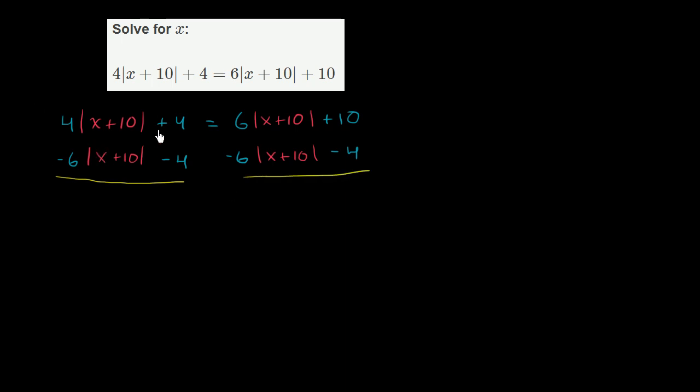On the left-hand side, the 4 minus 4, that's 0. You have 4 of something minus 6 of something. That means you're going to end up with negative 2 of that something. Negative 2 of the absolute value of x plus 10. Remember, this might seem a little confusing, but if you had 4 apples and you subtract 6 apples, you now have negative 2 apples. I guess you owe someone the apples. Same way, you have 4 of this expression. You take away 6 of this expression, you now have negative 2 of this expression.